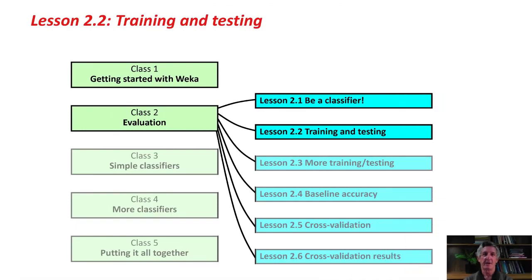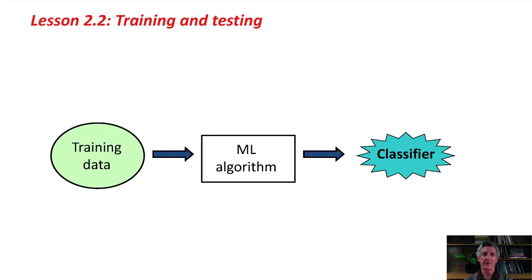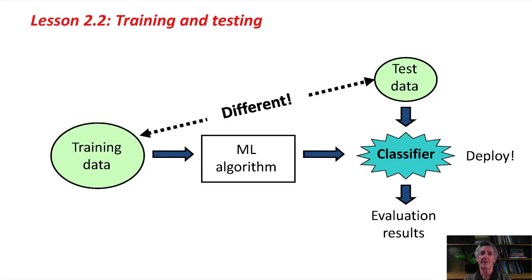Lesson 2.2 in Data Mining with Weka. Here we're going to look at training and testing in a bit more detail. Here's the basic situation: we've got a machine learning algorithm, we feed it training data, and it produces a classifier. With that classifier we can test it with some independent test data to get evaluation results. We can also deploy the classifier in a real situation to make predictions on fresh data. It's really important that when looking at evaluation results, you only get reliable results if the test data is different from the training data.